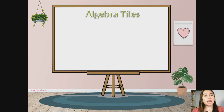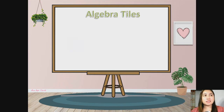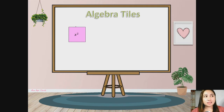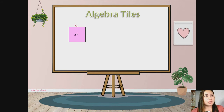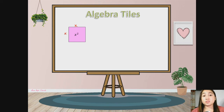Let me introduce you to the algebra tiles first. So the algebra tiles we'll be needing are these tiles. First, we have the x-square tile. Why x-square? Because from this side to this side, the length is x, and the other side is also x. So we can say it's a square — that's why getting the area of this tile is x-square. This tile represents our x-square tile.